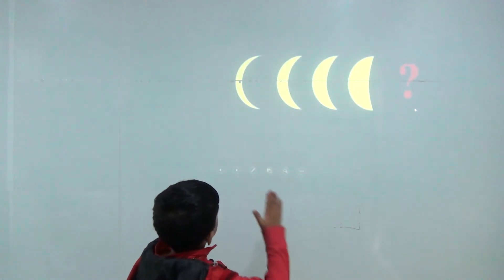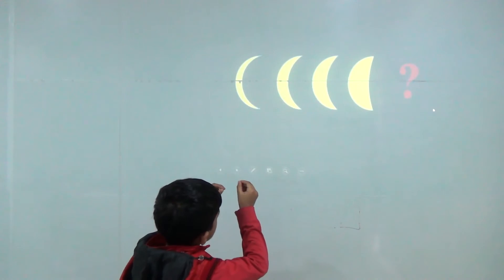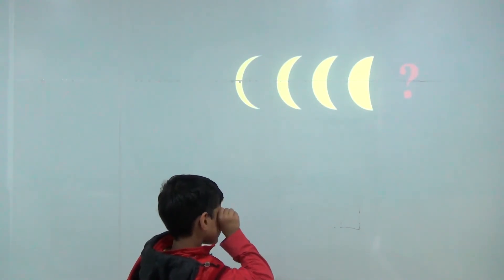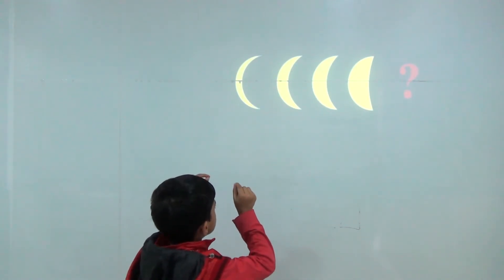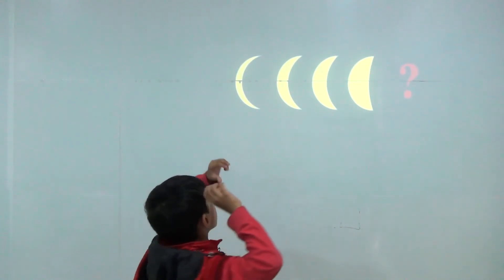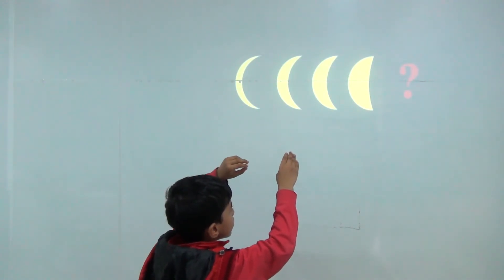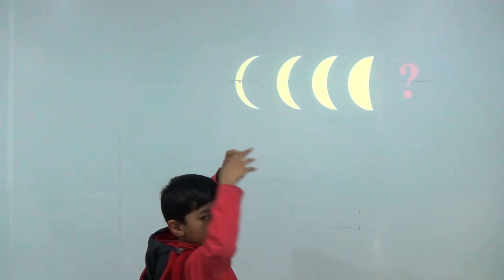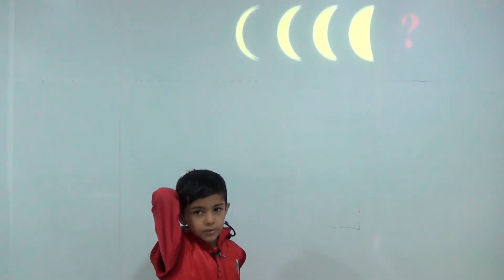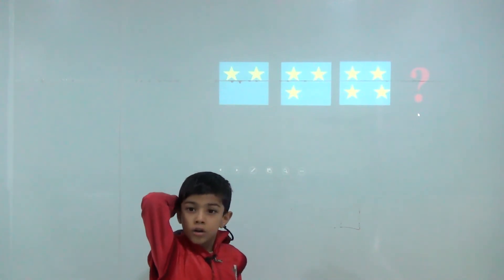Half circle, then half circle, then crescent, then bigger crescent. So now it would be a bigger crescent.